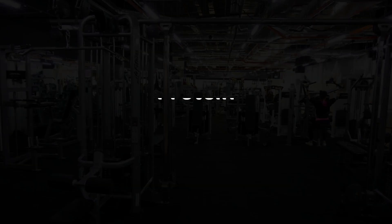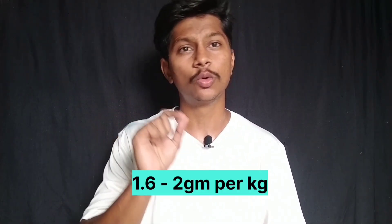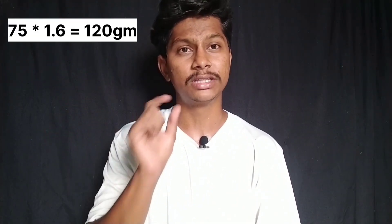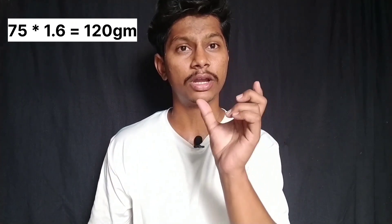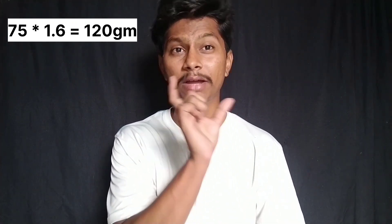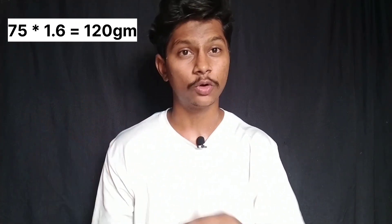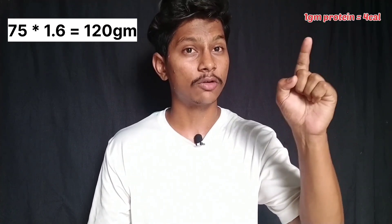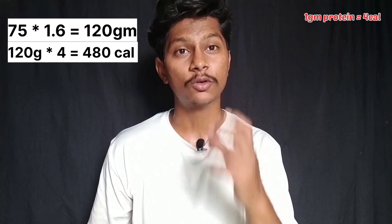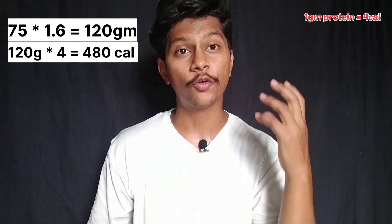Now the diet plan starts. In bodybuilding, the three main macronutrients are protein, fats, and carbohydrates. First, for protein, we use 1.6 grams per kg of bodyweight. So 75 kg × 1.6 = 120 grams of protein. Since 1 gram protein equals 4 calories, 120 × 4 = 480 calories from protein. Protein calculation is complete.